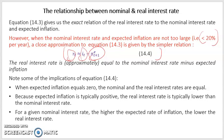The implications from equation 14.4 are: first, when expected inflation equals zero, the nominal and real interest rates are equal — if there's no change in prices, both rates are the same. Second, because expected inflation is typically positive, the real interest rate is typically lower than the nominal rate. Third, for a given nominal interest rate, the higher the expected rate of inflation, the lower the real interest rate. This means inflation depreciates the real interest rate given a nominal interest rate.